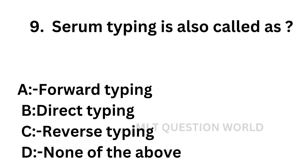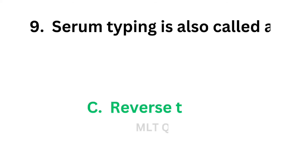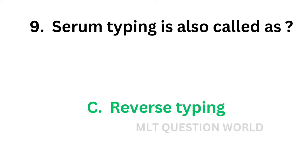Question number 9: Serum typing is also called as — option A: Forward typing, option B: Direct typing, option C: Reverse typing, option D: None of the above. Patient serum is mixed with known red cells in serum typing, and serum typing is also called reverse typing. The correct answer is option C, reverse typing.